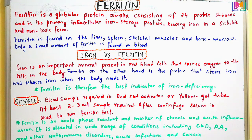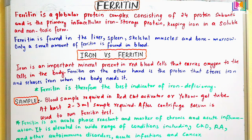Ferritin is elevated in a wide range of conditions like CKD (chronic kidney disease), RA (rheumatoid arthritis), other autoimmune disorders, acute infections, and different types of cancers — so ferritin can also play the role of a tumor marker. Ferritin is therefore used to diagnose iron storage disorders as well as any kind of acute and chronic inflammation.